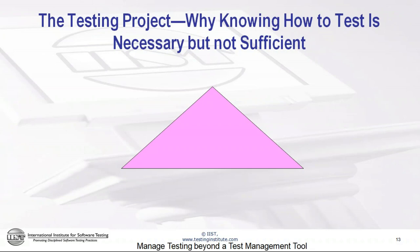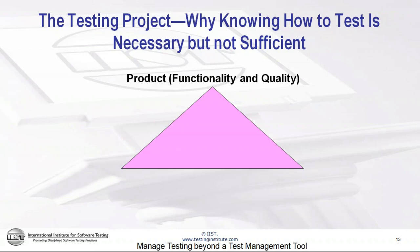Many of you may be familiar with the project manager's triangle, which gives us a different perspective and hopefully makes it clearer why simply knowing how to test is necessary but not sufficient for a successful testing project. The project manager's triangle identifies three major variables: the product or scope — which is the combination of functionality and quality, because functionality and quality cannot be separated entirely but are not the same — second, cost, which is primarily a function of resources and staffing, and third, time or schedule.